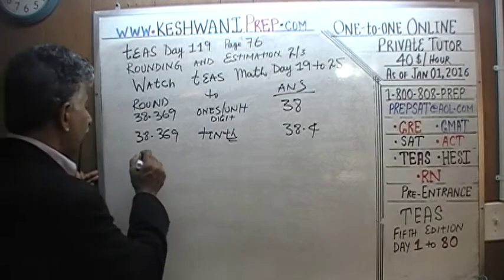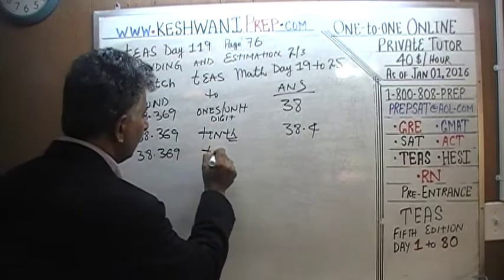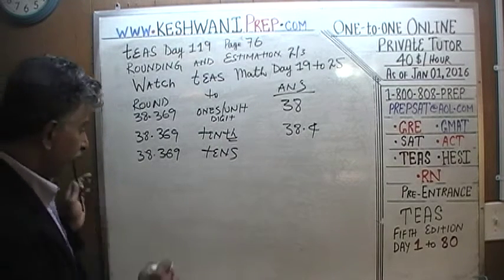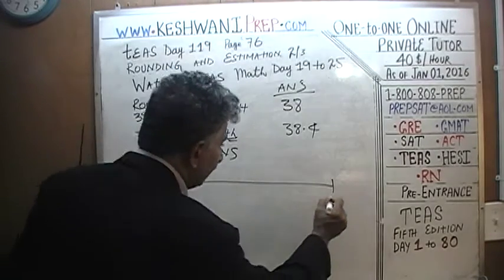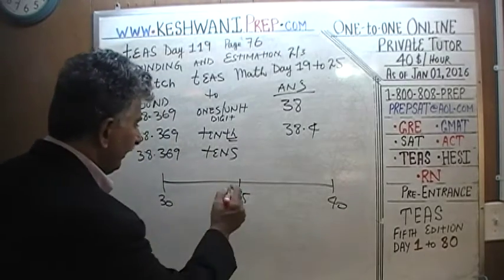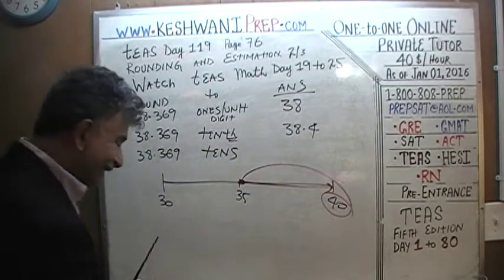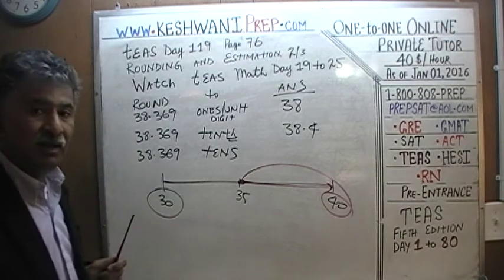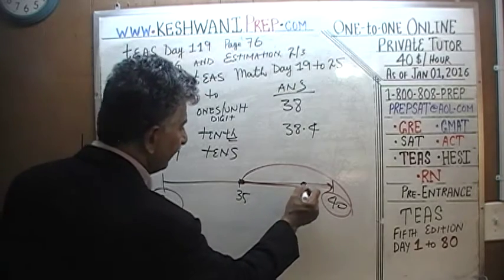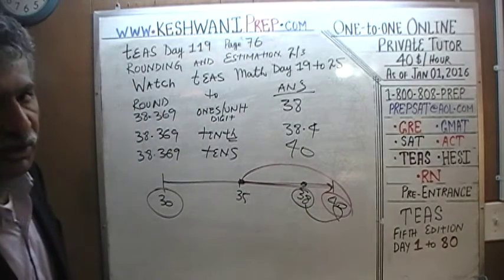How about rounding 38.369 to the nearest tens digit? Here is 30, here is 40, and the midpoint is 35. Since 38 is greater than 35 — equal to or more than 35 — we round up. The nearest tens to 38 is 40, not 30.